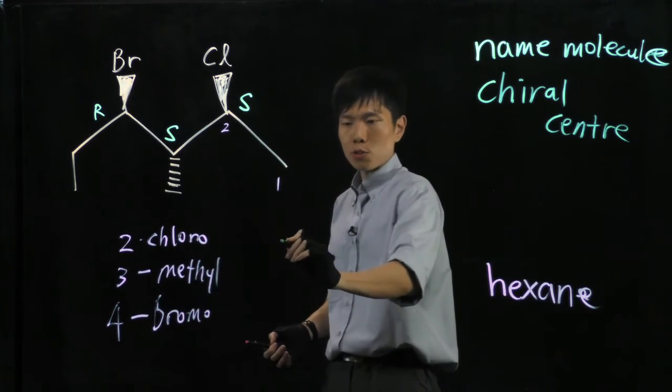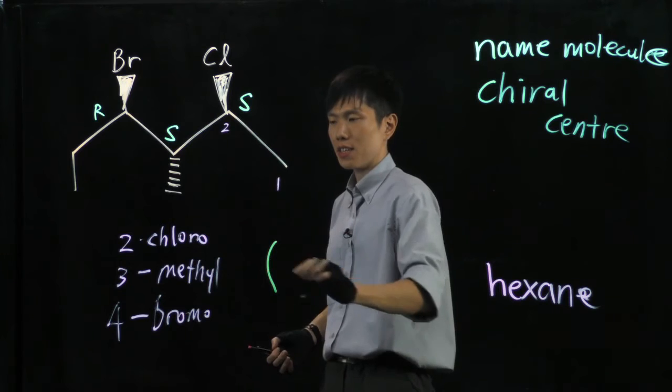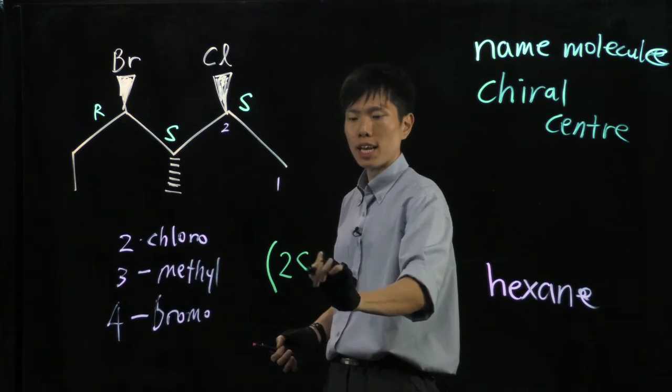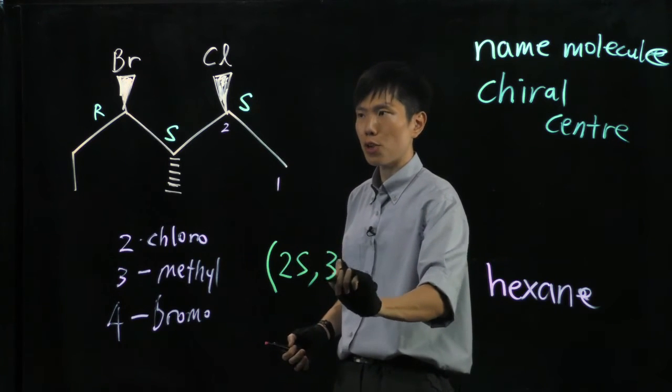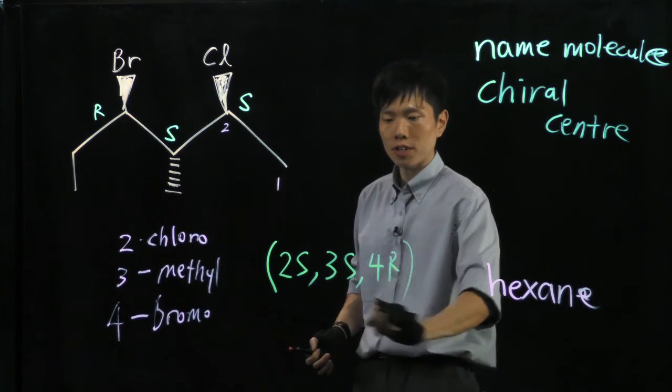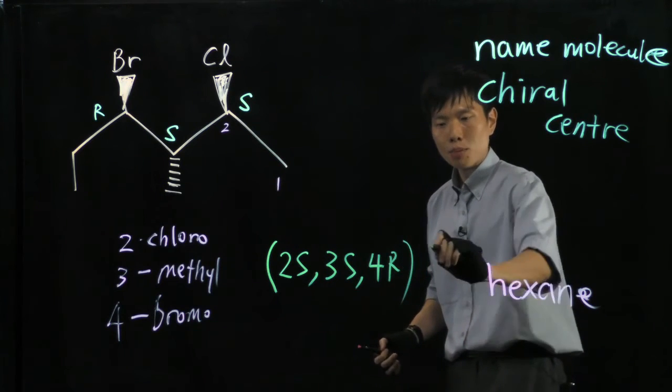So I need to put down specifically, starting from the lower number first. For the 2, it is 2S, 3S, 4R. Okay? I close it and then I put hyphen.